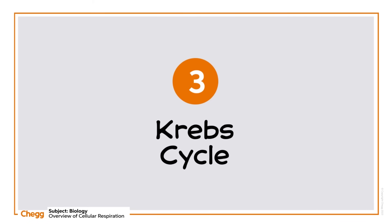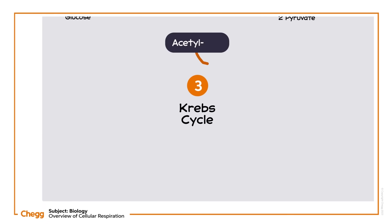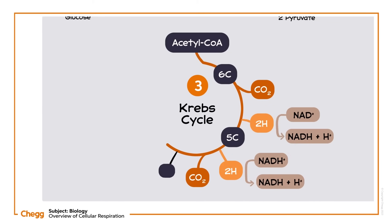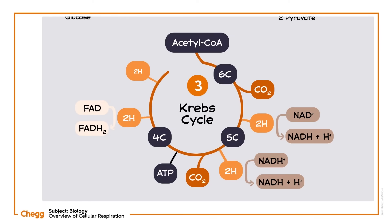The Krebs cycle begins with a combination of acetyl-CoA and oxaloacetate, which results in a six-carbon compound. These molecules are then further metabolized to produce still other products. The Krebs cycle is also known as the citric acid cycle.